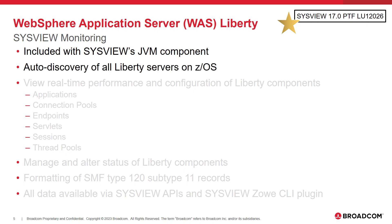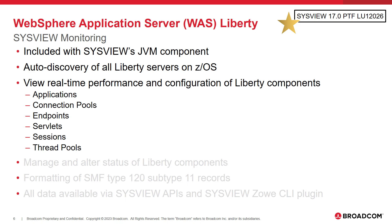SysView has the ability to auto-discover all Liberty servers running on a system. Liberty servers can run embedded in several different types of address spaces including KIX, ZOS Connect, ZOSMF, and others. Regardless of where the Liberty server is running, SysView can discover it. When the SysView JVM agent is configured within a Liberty server, performance metrics and configuration information about the server and its components can be displayed.